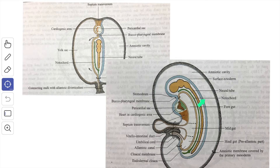The amniotic cavity gradually increases in size at the expense of the extra-embryonic coelom and eventually the amnion and the chorion leaves are fused. Finally, the extra-embryonic coelom is completely obliterated except for a small part contained in the proximal part of the umbilical cord up to the 10th week of intrauterine life.